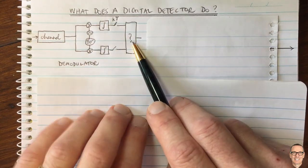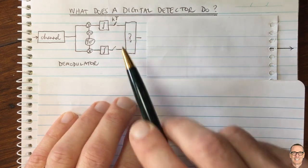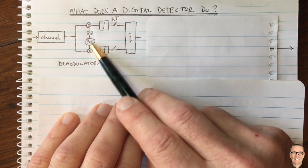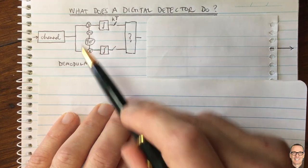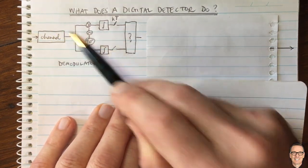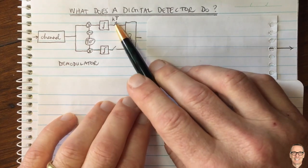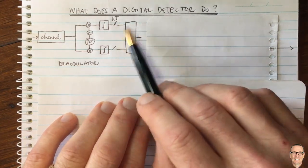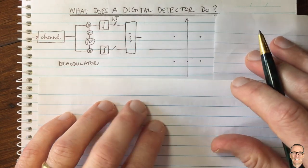In the detector, we are getting a component for the cosine and a component for the sine, which is 90 degrees out. These are continuous-time waveforms, but they're now being sampled. Now let's look at one symbol and where it appears on the constellation diagram.